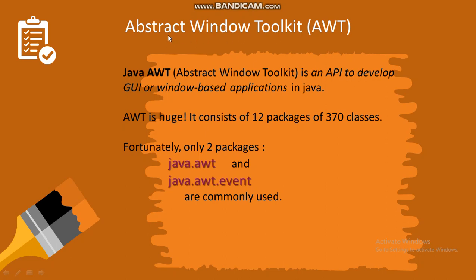So Abstract Window Toolkit is an API — that is, Application Programming Interface — which is used to develop a GUI or window-based application in Java. You can create windows, create graphical elements, and utilize graphics by using AWT. The AWT package exists as java.awt, which is a very large package consisting of 12 packages with around 370 classes.